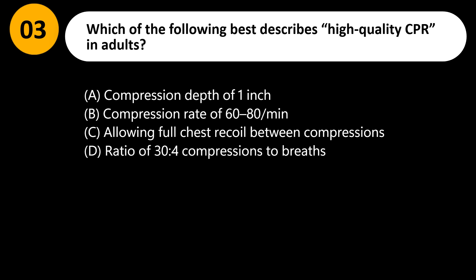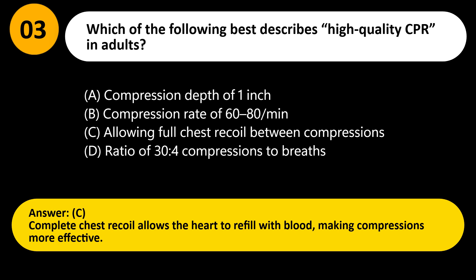Which of the following best describes high-quality CPR in adults? A) Compression depth of one inch, B) Compression rate of 60–80/min, C) Allowing full chest recoil between compressions, D) Ratio of 30 to 4 compressions to breaths. Answer: C. Complete chest recoil allows the heart to refill with blood, making compressions more effective.